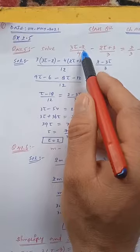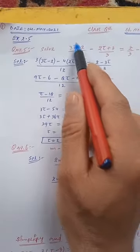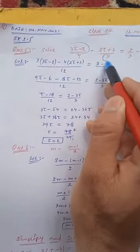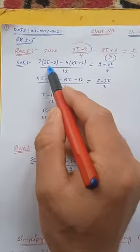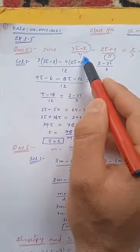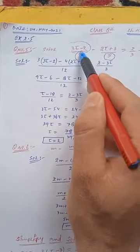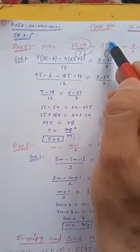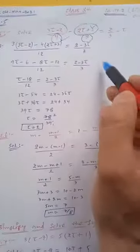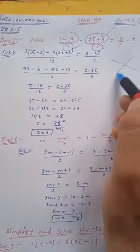We will simply do cross multiplication. Cross multiplication means you will multiply 3t - 2 with 3, like this: 3 × (3t - 2). Minus is there so you add minus as it is. And 4 you will multiply with 2t + 3. Cross multiplication means you are multiplying the opposite numbers.